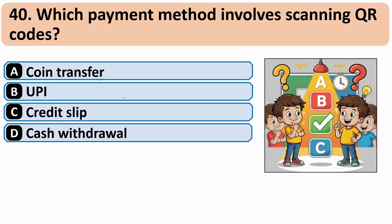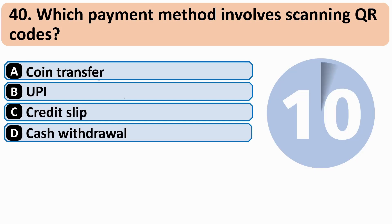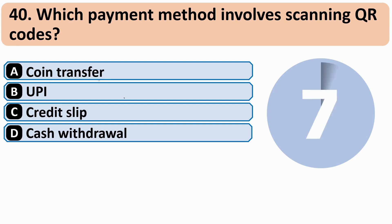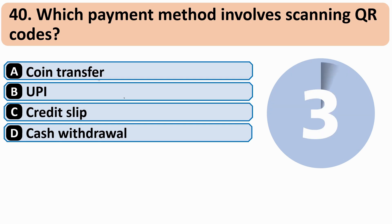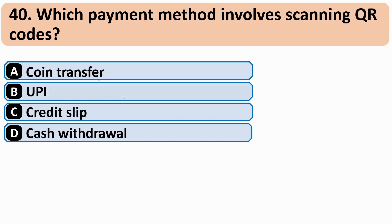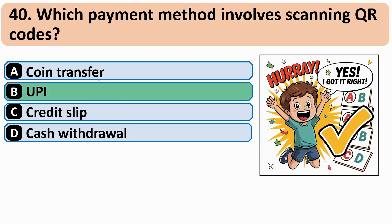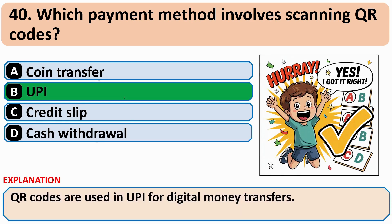Which payment method involves scanning a QR code? The correct answer is B — UPI.